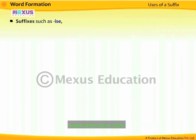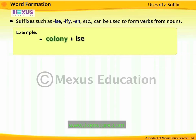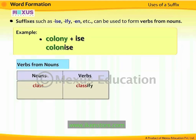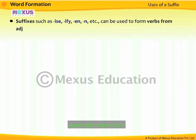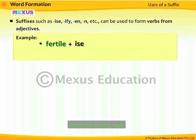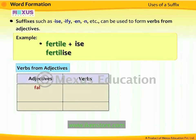Suffixes such as -ise, -ify, -en, etc. can be used to form verbs from nouns. For example, the noun 'colony' plus the suffix '-ise' forms the verb 'colonize.' Thus, 'class' becomes 'classify' and 'black' becomes 'blacken.' Suffixes such as -ise, -ify, -en, etc. can also be used to form verbs from adjectives. For example, the adjective 'fertile' plus '-ise' forms 'fertilize.' Thus, 'false' becomes 'falsify,' 'tight' becomes 'tighten,' and 'wide' becomes 'widen.'